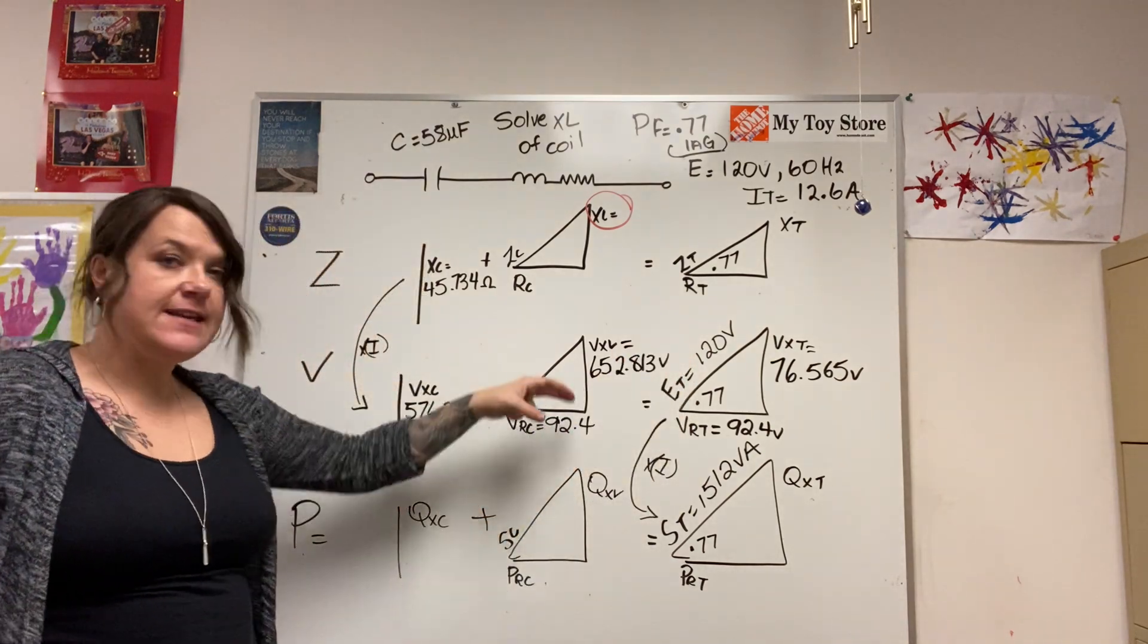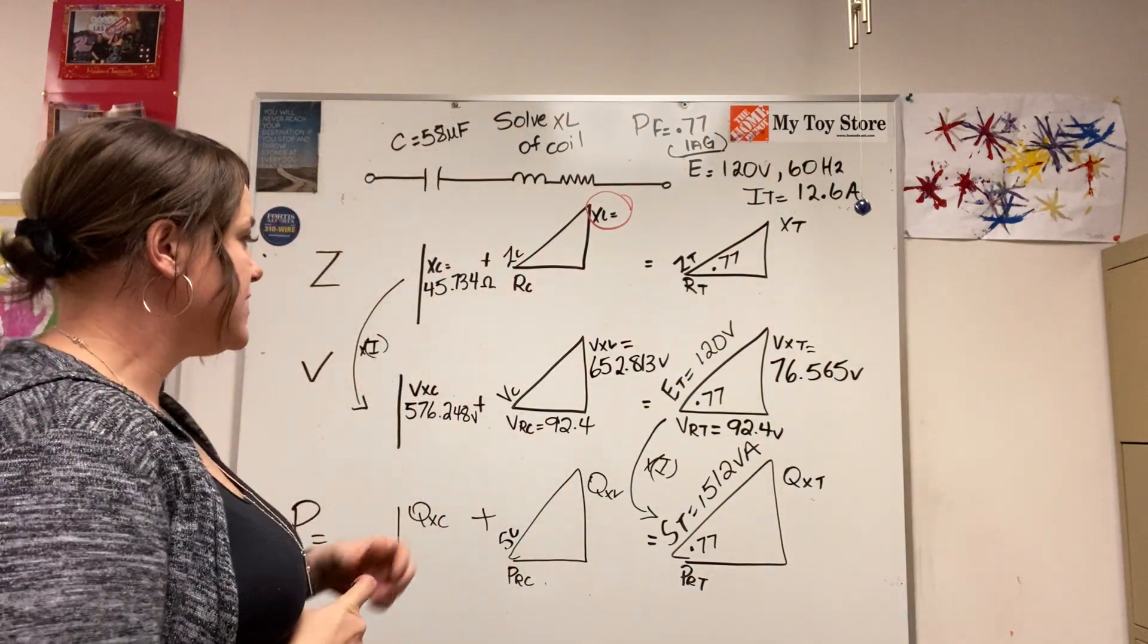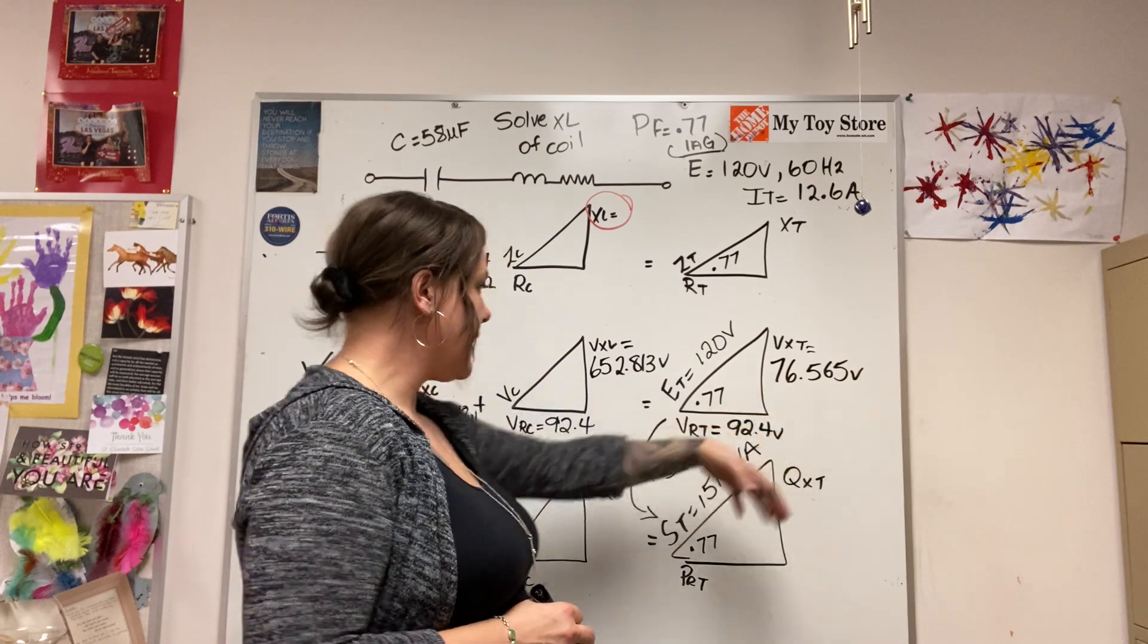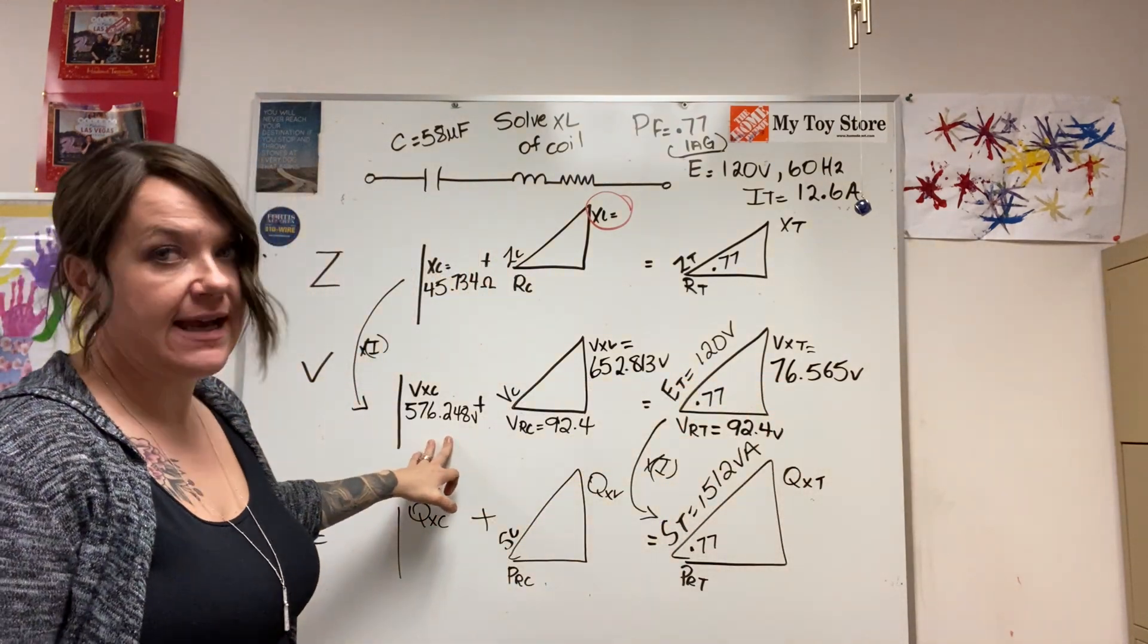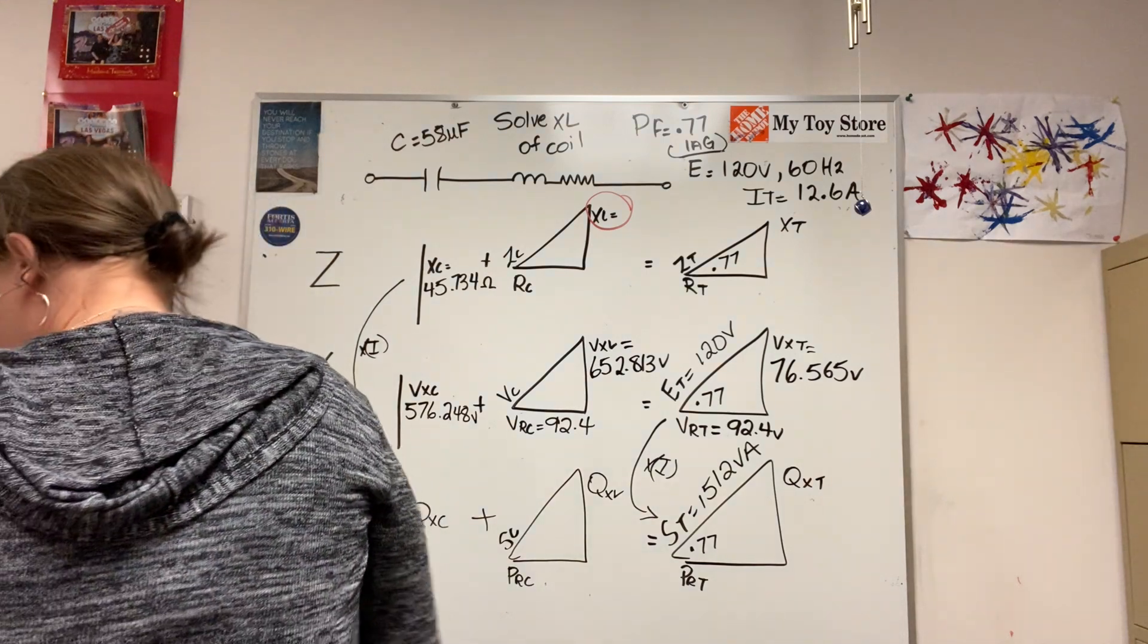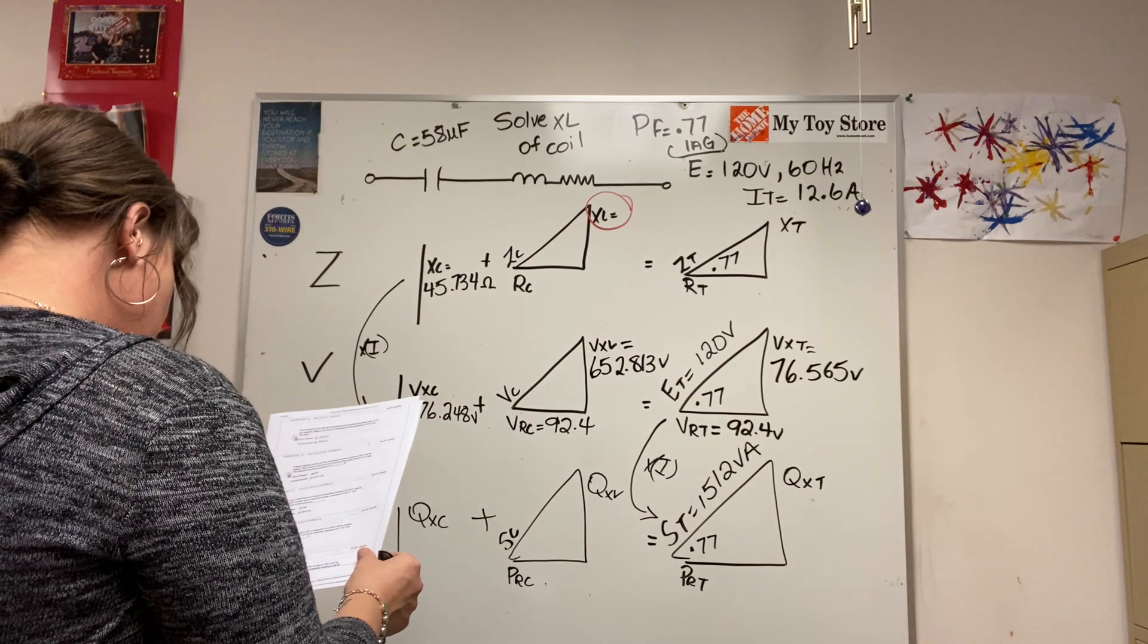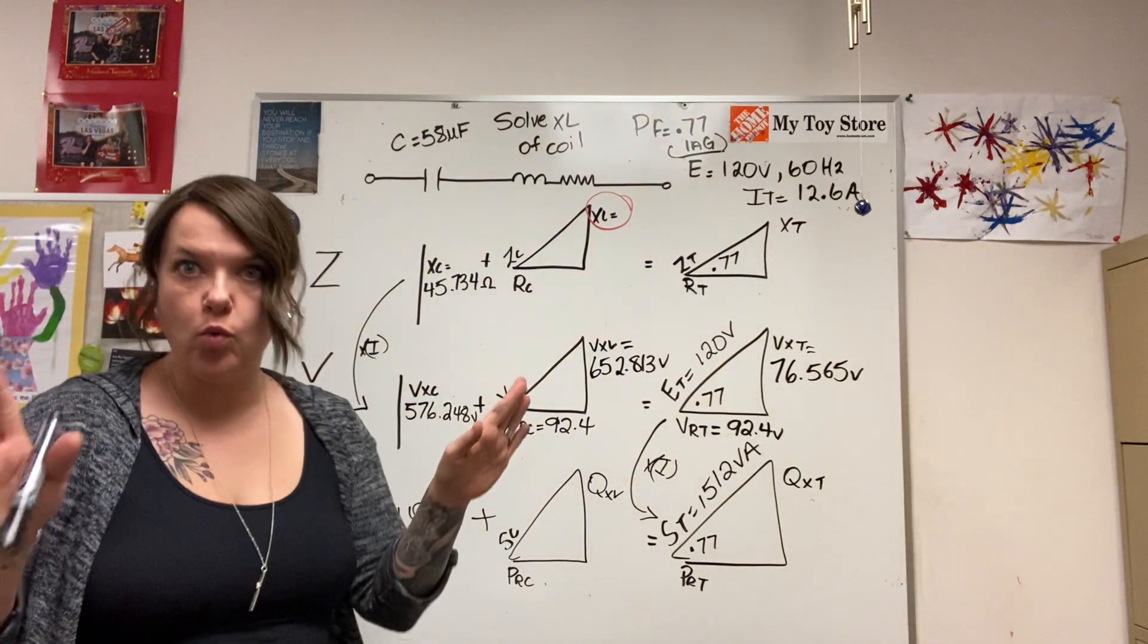VXL and VXC are 180 degrees apart. So we are able to take this lagging reactance or volt drop reactance and add it to this VXC. So that is the answer to the question. Oh no it's not, that's just my VXL. One more step. Sorry guys, I was getting really excited there.